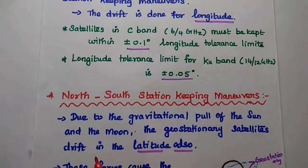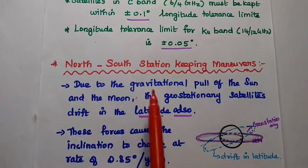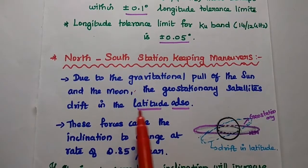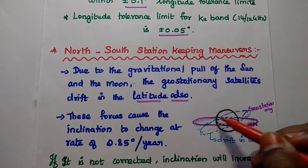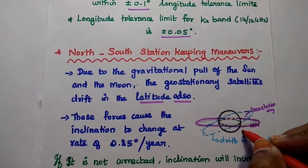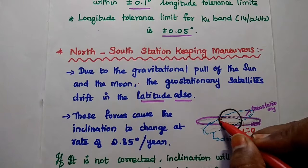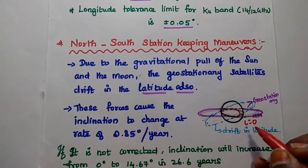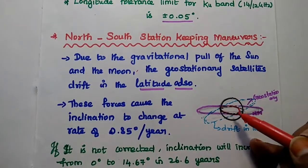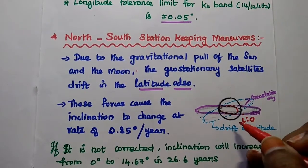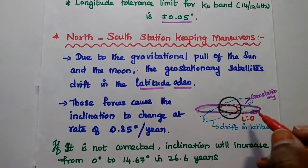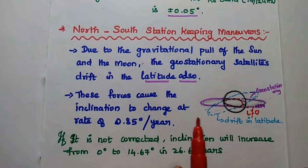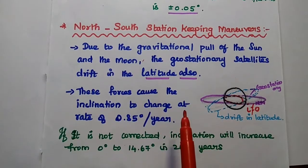Next, north-south station keeping. Due to the gravitational pull of the sun and moon, the geostationary satellites also drift in latitude. The inclination of the geostationary orbit is 0 degrees because the equatorial plane is the same as the geostationary orbit plane. However, due to the gravitational pull of the sun and moon, the geostationary satellites drift in latitude — meaning the inclination changes.